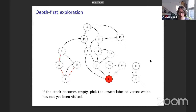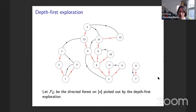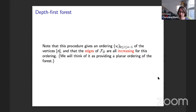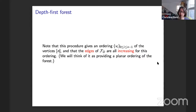I explore the out-neighborhood of vertex 3 — vertices 8, 10, and 15 — and continue depth-first. This procedure gives a nice ordering of the vertices, with the property that the edges are increasing for that ordering. I think of this as providing a planar ordering of the forest. This enables us to divide the edges of my digraph into three parts: red forest edges (all increasing for the planar ordering), orange surplus edges (increasing for the ordering but not forest edges), and blue back edges (decreasing for the planar ordering).